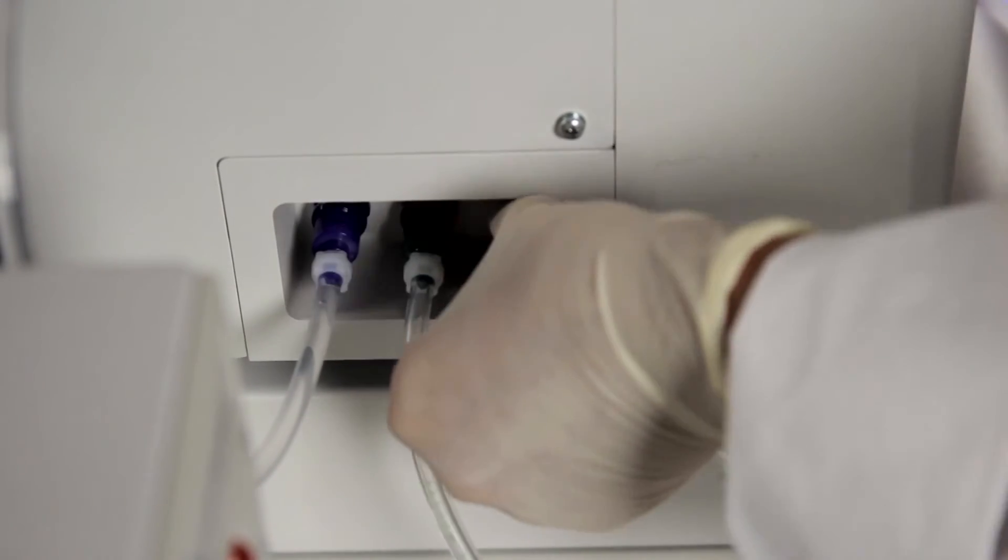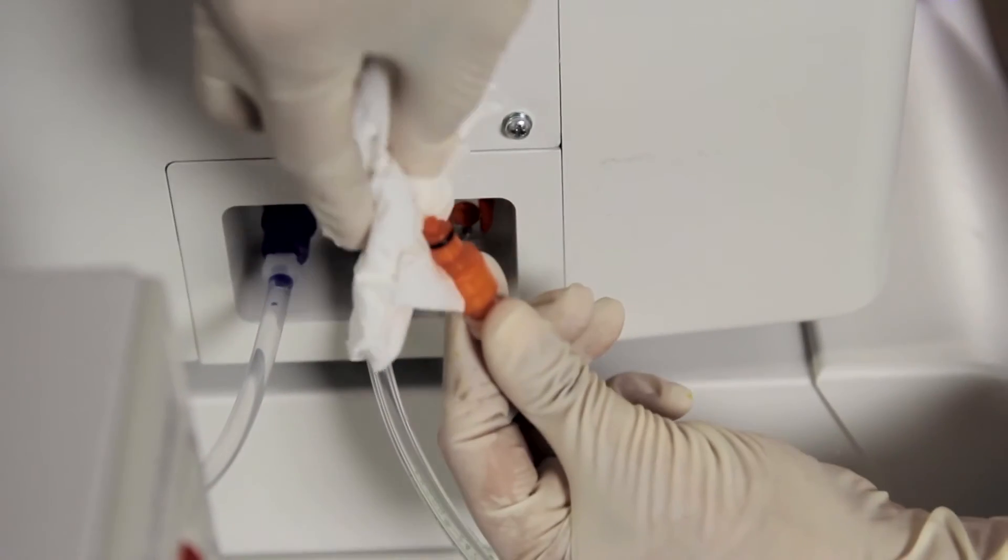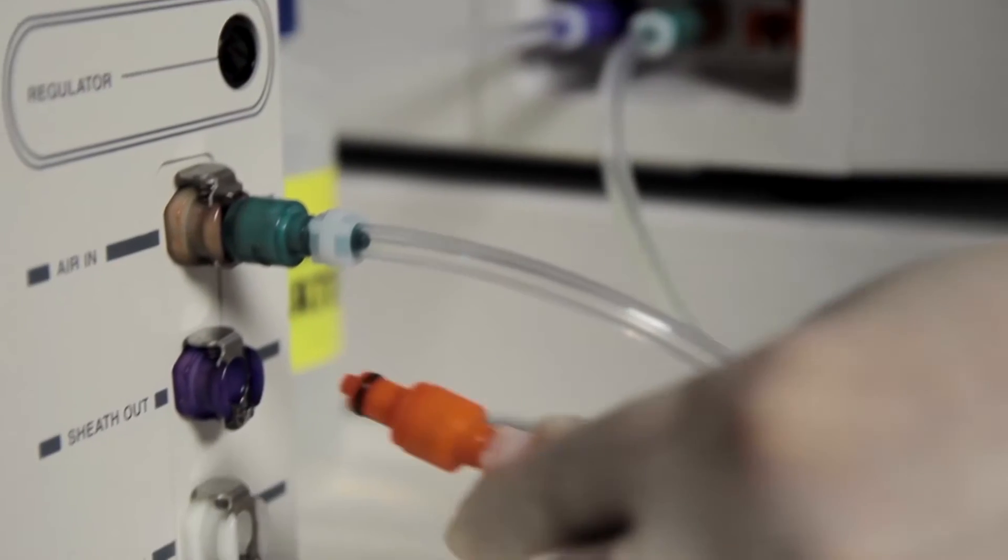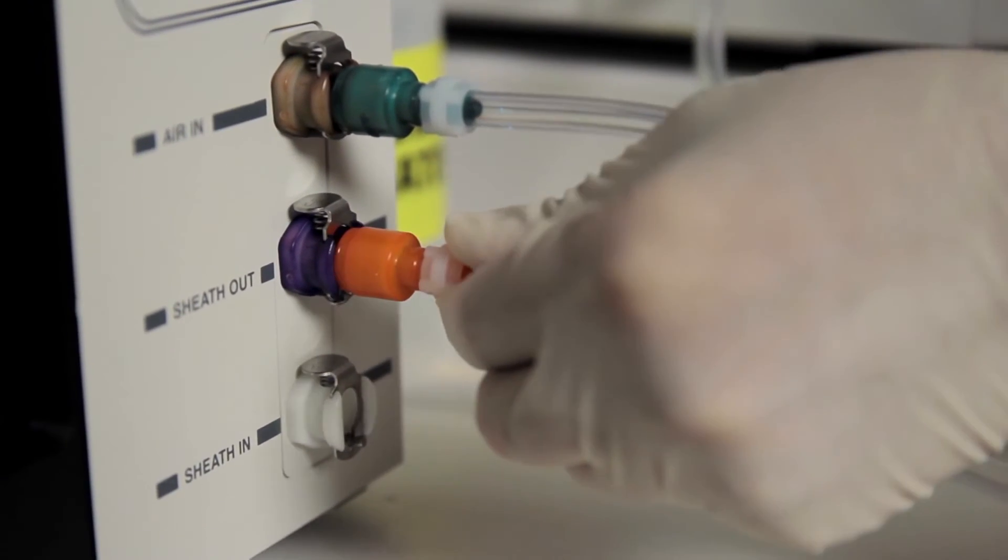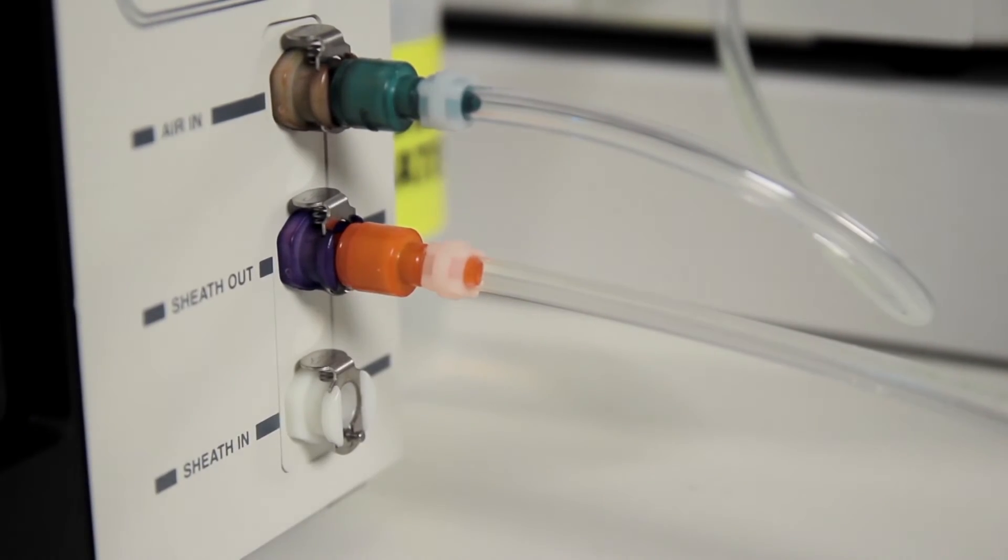Disconnect the orange waste line from the reader and wipe the orange connector with bleach or alcohol. Next, connect the clean orange connector to the blue HTF sheath outfitting.